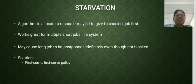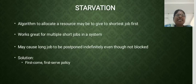Starvation. An algorithm to allocate a resource may give priority to the shortest job first. This works great for multiple short jobs in a system, but may cause a long job to be postponed indefinitely, even though it is not blocked. The solution is a first-come, first-served policy. Thank you.